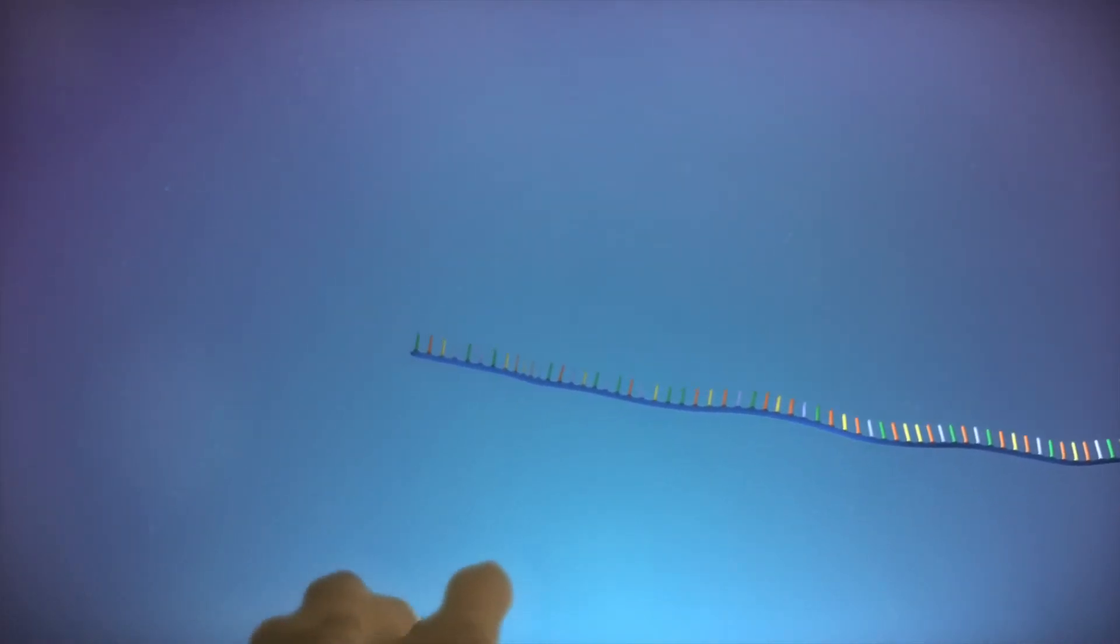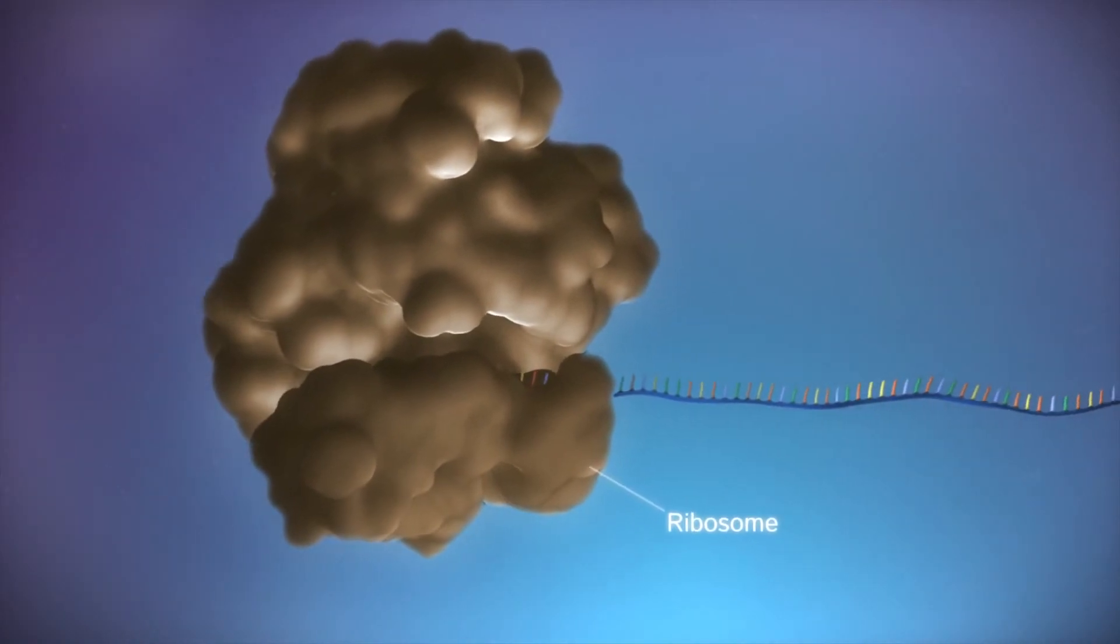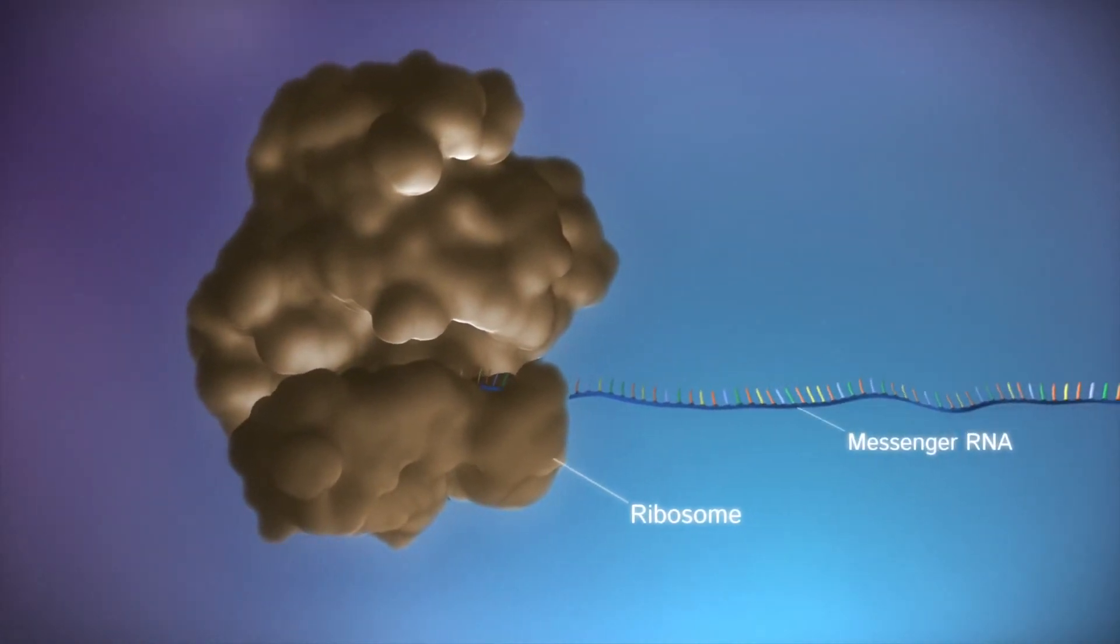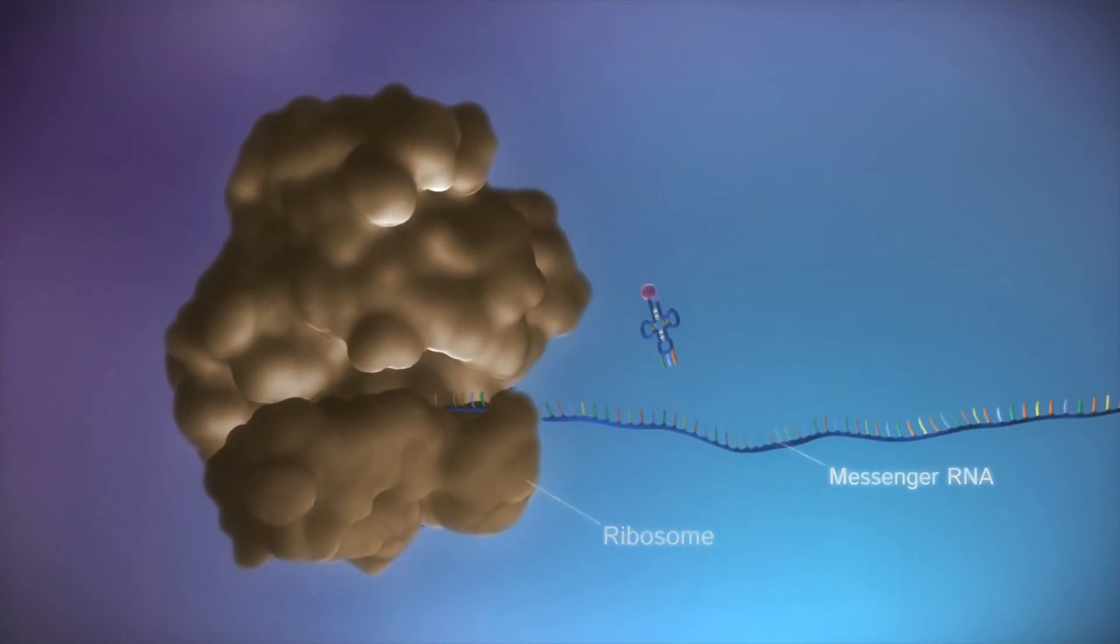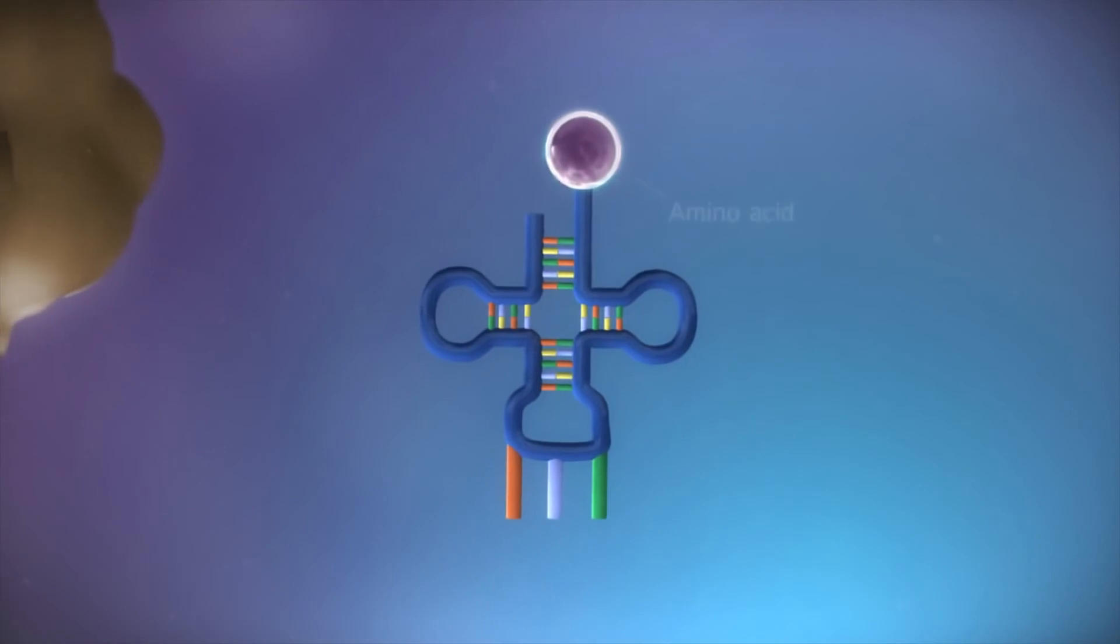Protein factories in the cytoplasm, called ribosomes, bind to the messenger RNA. The ribosome reads the code in the messenger RNA to produce a chain made up of amino acids.